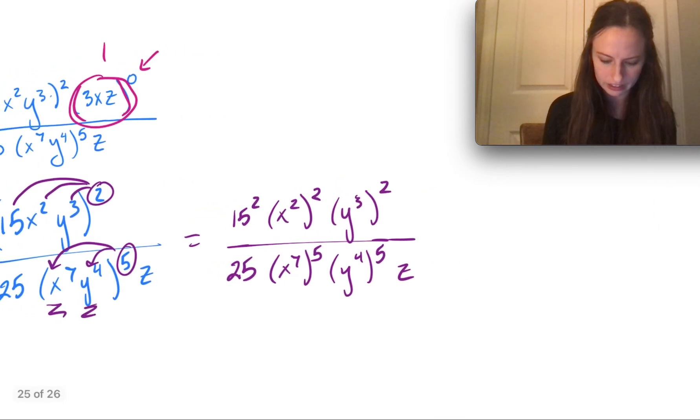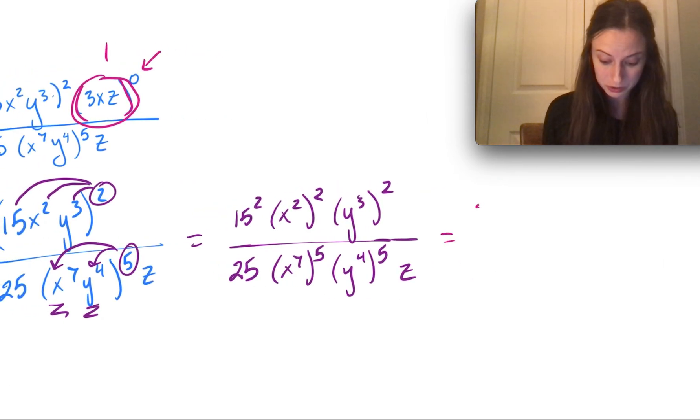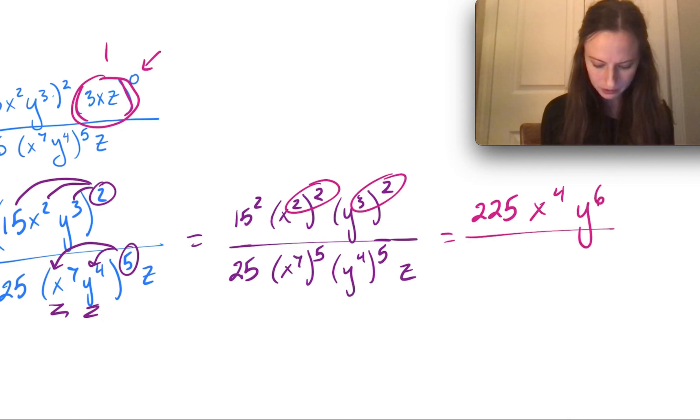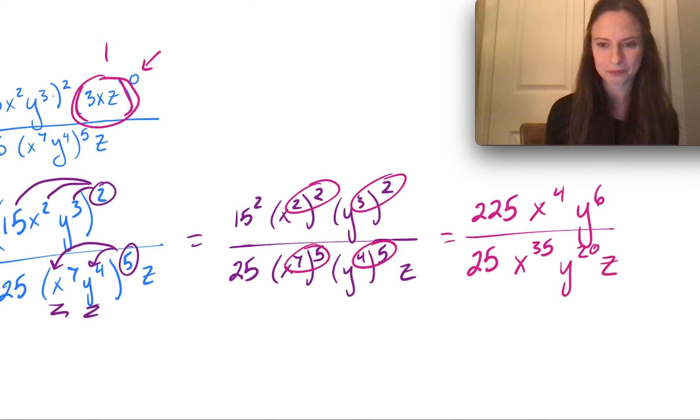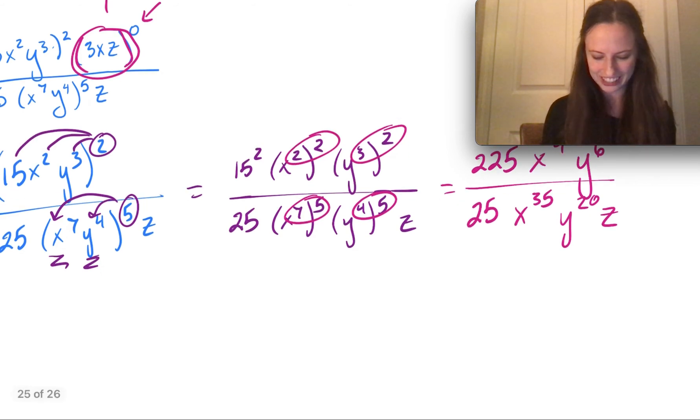So let's see, we've got 15 squared is 225. Here I'm going to multiply my exponents, so that's x to the 4th. Multiply these exponents, so that's y to the 6th. In the denominator, we have 25. Multiply again, that's x to the 35. Multiply again, that's y to the 20th. And we've got a z in the denominator there. That's just, nothing happens to it.